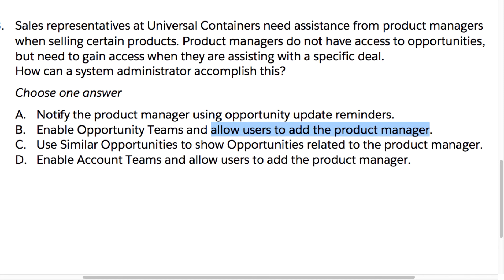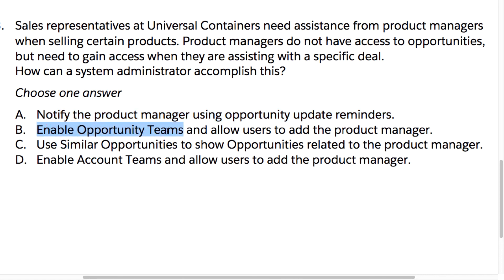Answer A is not correct. You can notify the product manager using opportunity update reminders — you could do a workflow rule, an email alert, or assign a task — but that still wouldn't give the product manager access to the opportunity. You could send an email alert or task with a link to that opportunity, but if they don't have access, they will be blocked from accessing it.